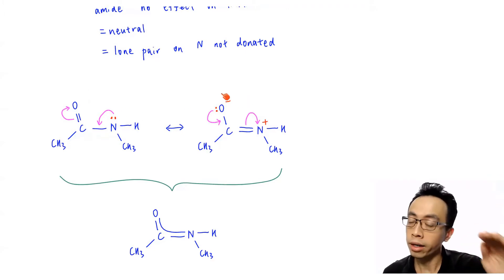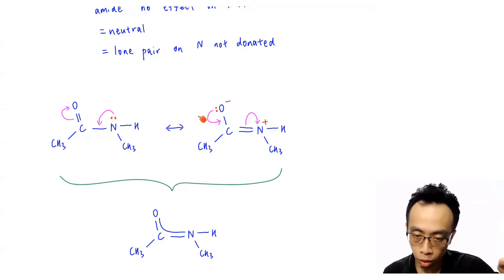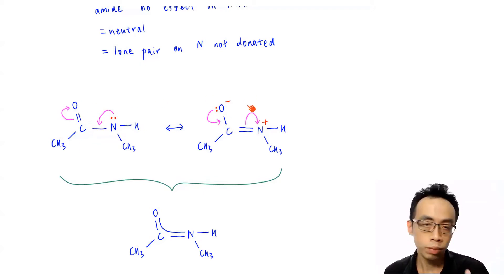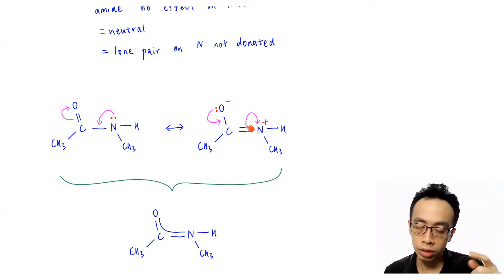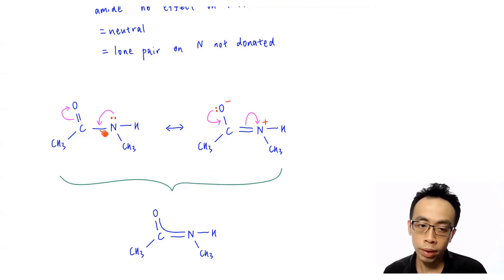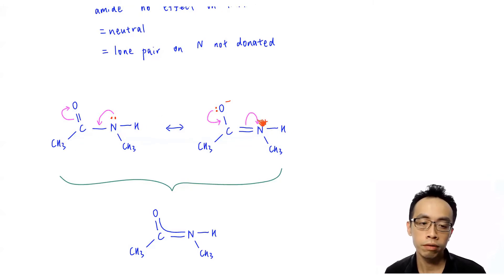But the lone pair doesn't stay on oxygen. It can come back down — draw an arrow from the lone pair on oxygen pointing back between carbon and oxygen to reform the C=O double bond, and open up the double bond between carbon and nitrogen, so the electrons go back to nitrogen. The lone pair returns to nitrogen. So we have the resonance structures of the amide showing where the lone pair is.